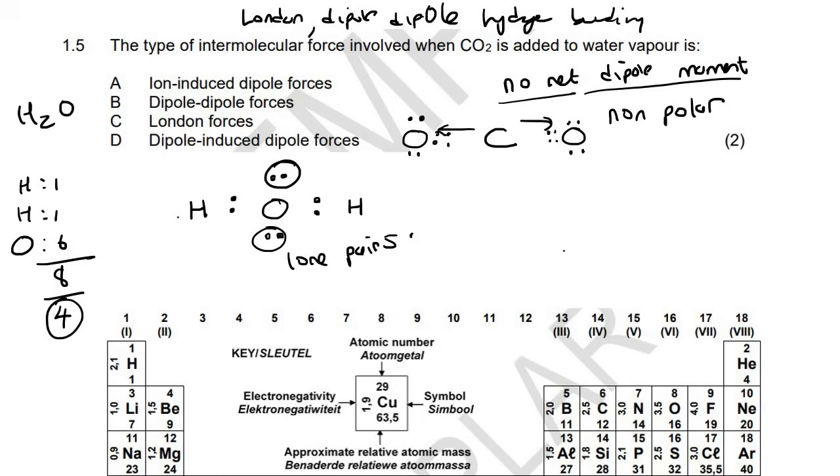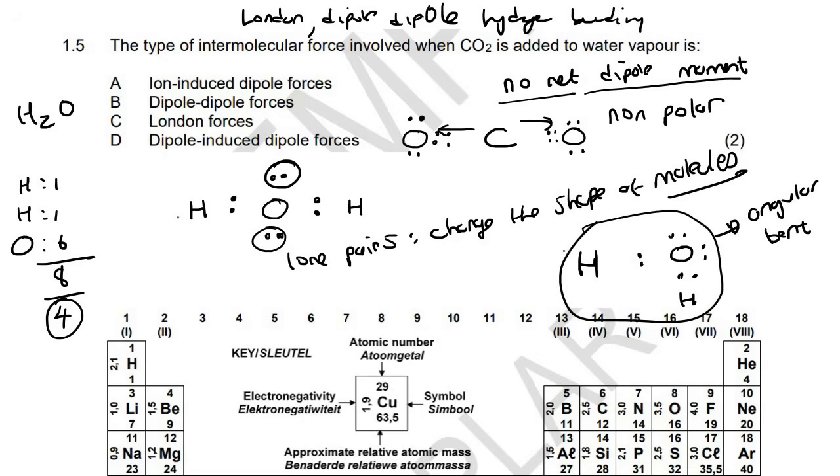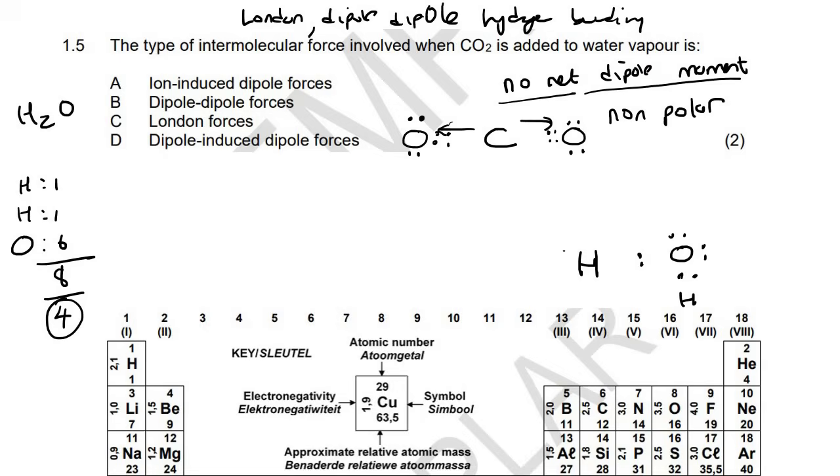These are called lone pairs, and lone pairs change the shape of molecules. This is where your teacher in class draws water like this - we call this the angular or bent shape. This is what water actually looks like, making an L shape. It's not linear, because if you leave it linear you'd think water is non-polar when you draw the arrows. Why didn't we do that for CO₂? Because that one didn't have any lone pairs. Lone pairs are what cause these shape changes.